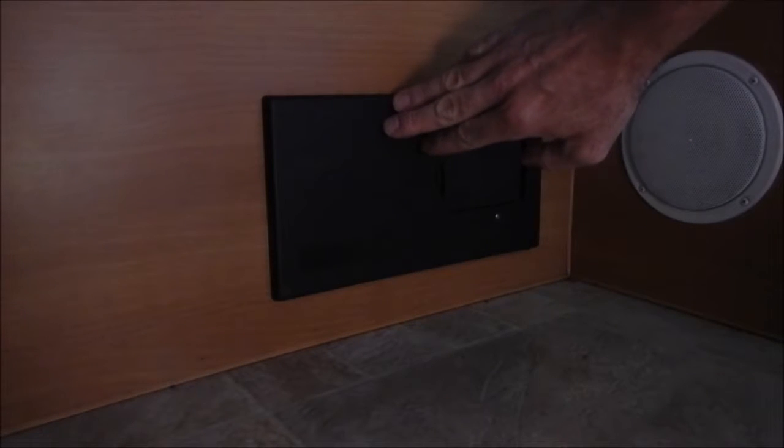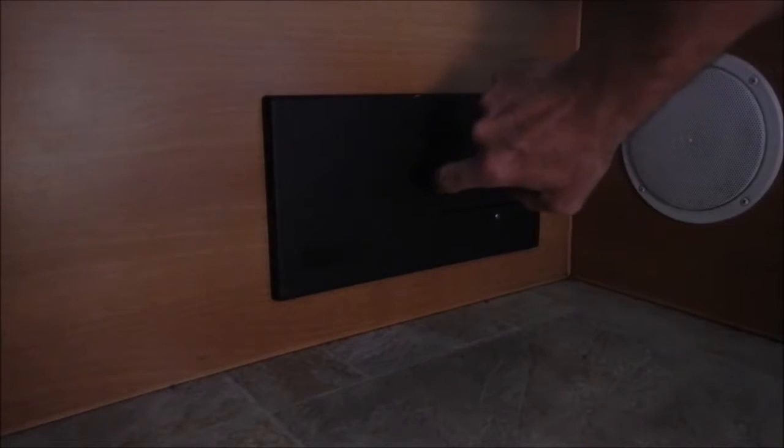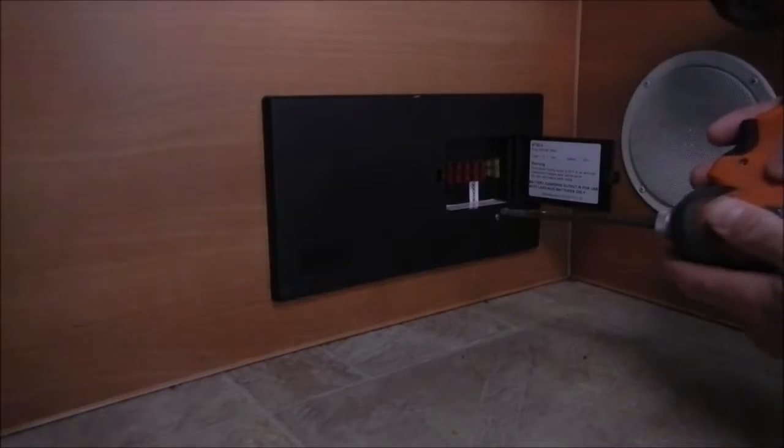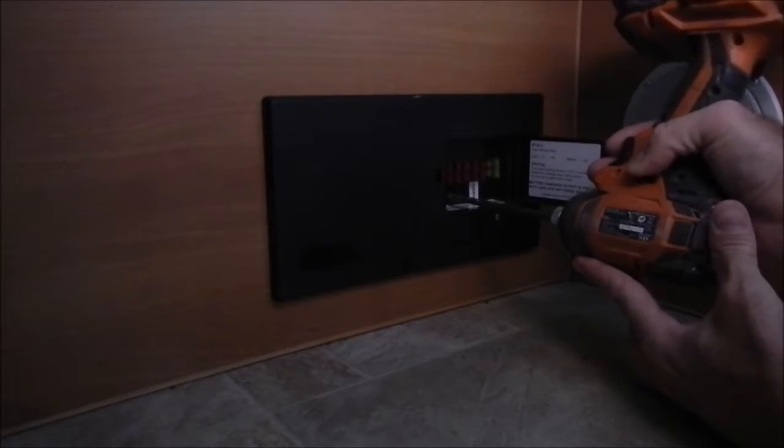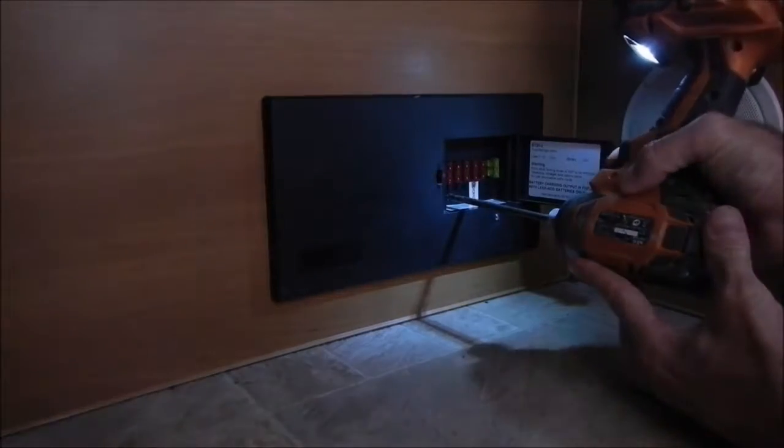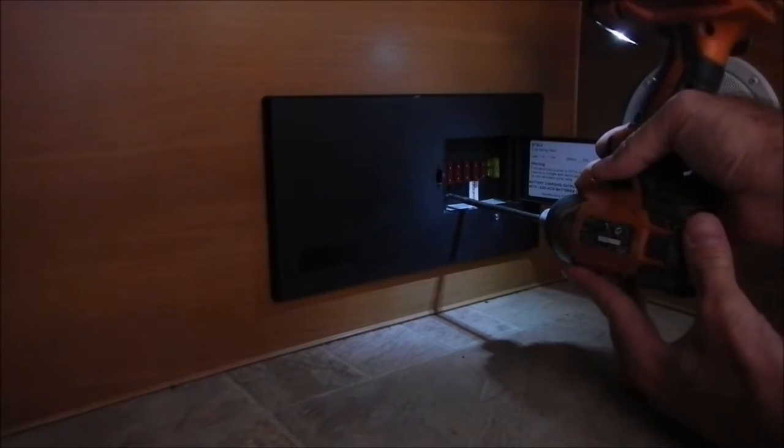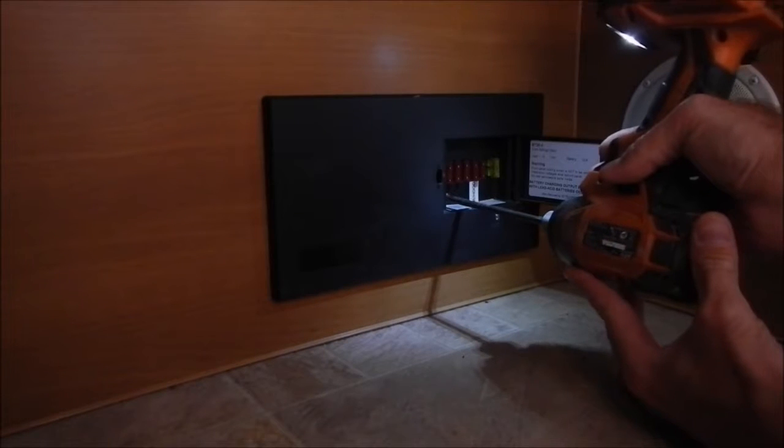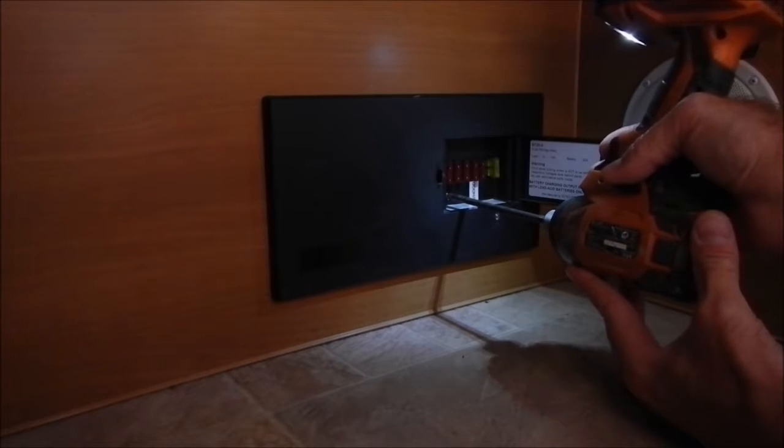So this is the fuse box which is under the seat. Now to take this cover off, open the trap door there. I'm going to remove this screw. So one screw in here holds the cover on. There it is.